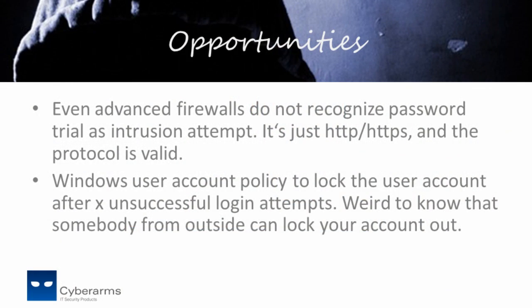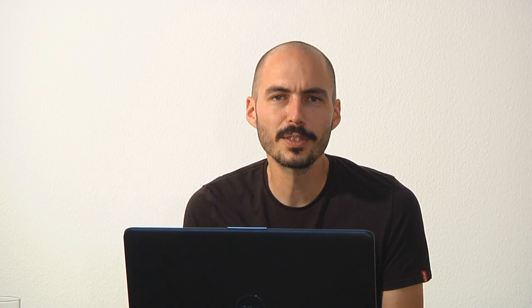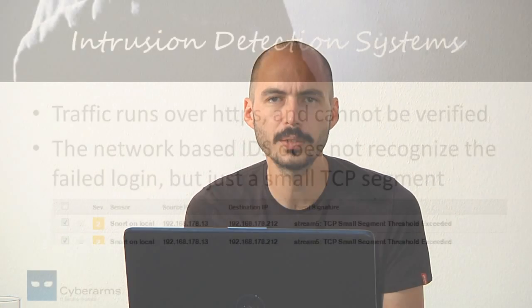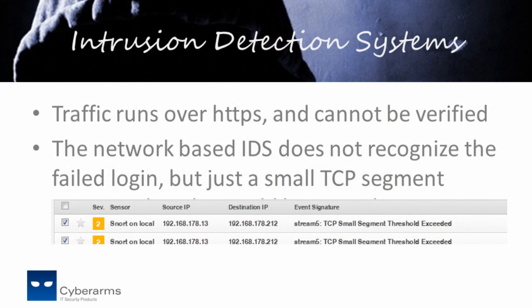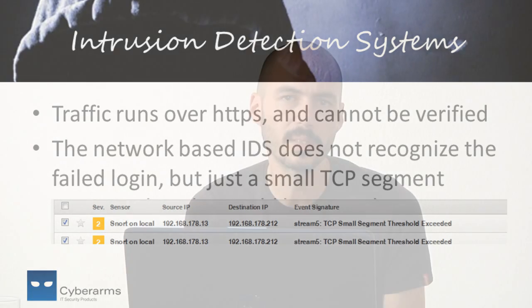By default, Windows can lock out a user account after a given number of bad logins. But would you like to lose access to your company resources because somebody else tried to login with your account? IDS tools like Snort monitor the network for unusual traffic, but as the protocol is encrypted with HTTPS, Snort cannot look into the packets. In our test lab, Snort only reported small TCP/IP segments, which can be anything.